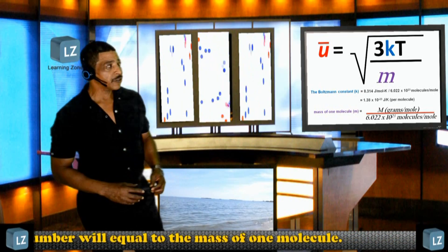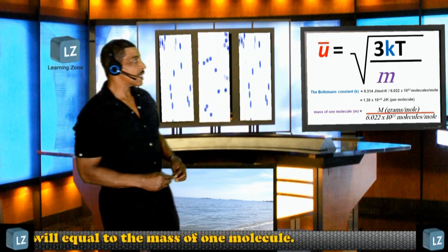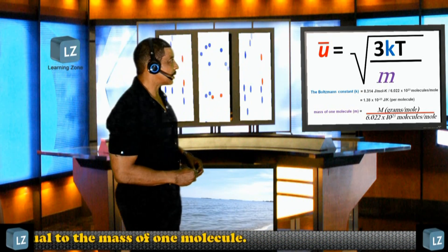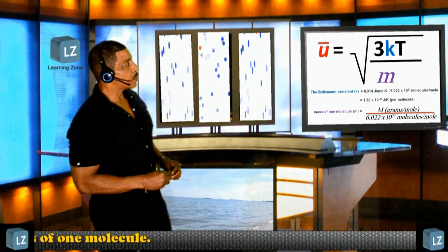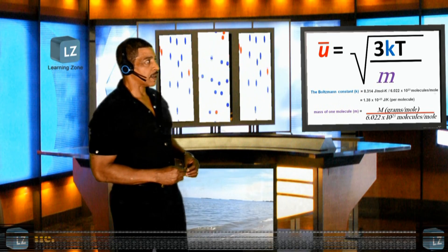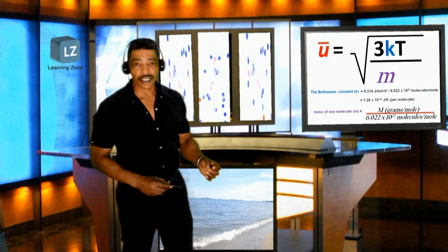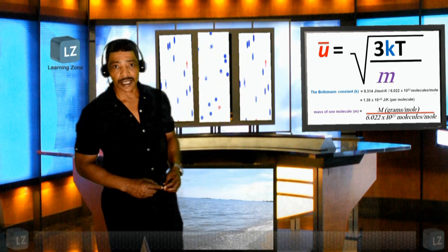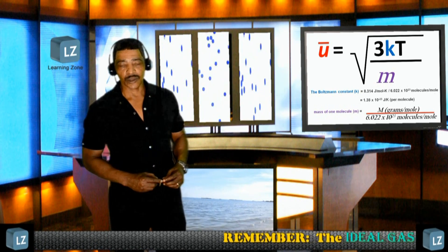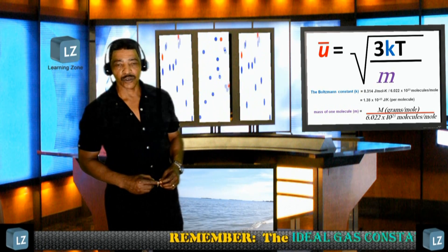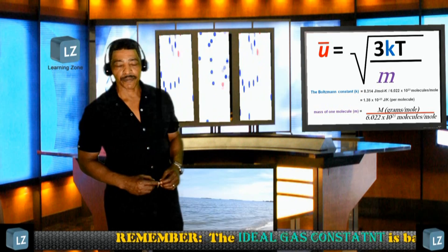Boltzmann's constant was calculated by dividing 8.314 J per K, which is actually the universal gas constant, by Avogadro's number, 6.022 times 10 to the 23 molecules per mole.